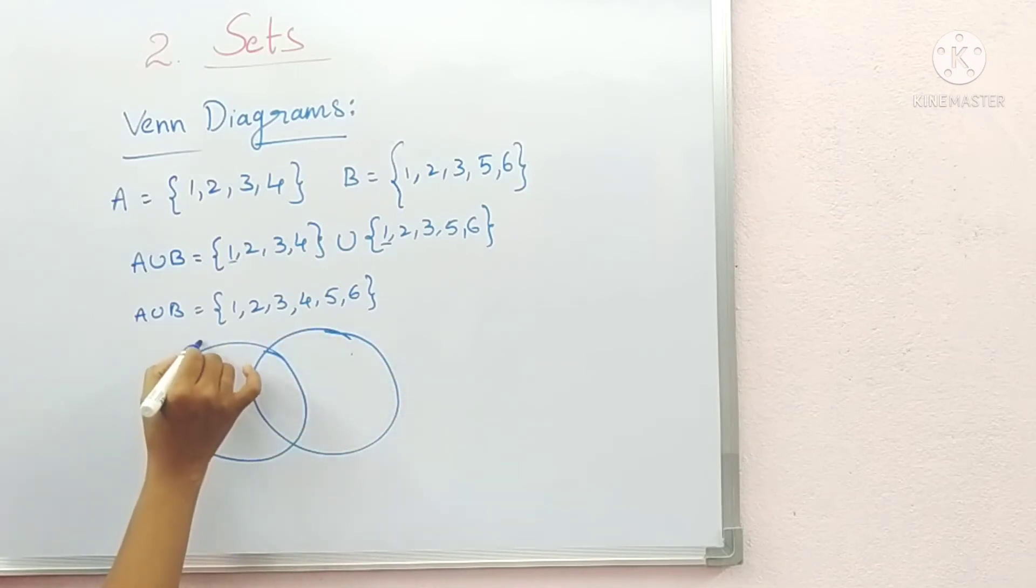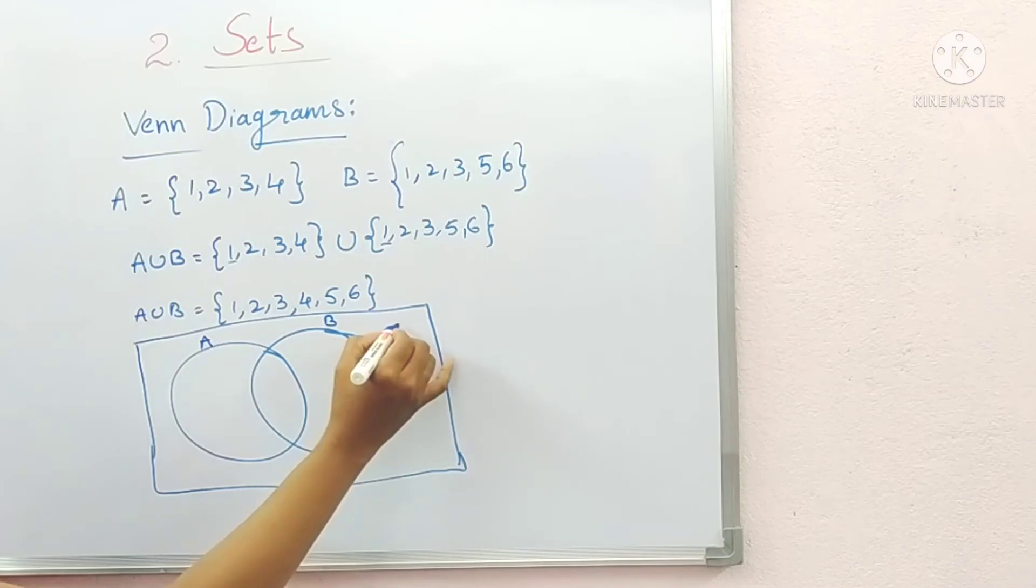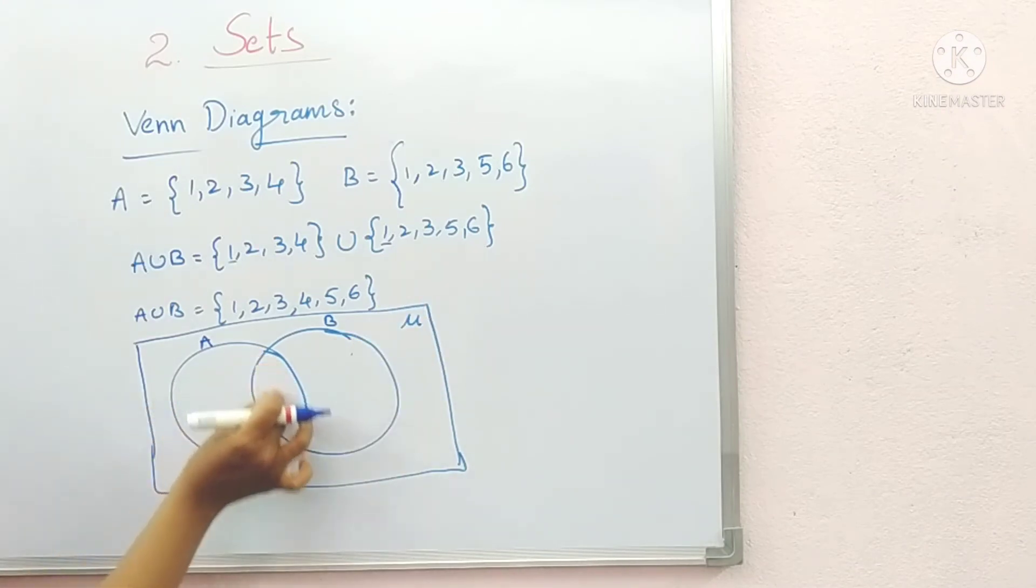So this is set A and this is set B, and this is the universal set. Here you see in this area both A and B are overlapping.